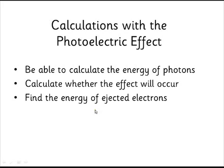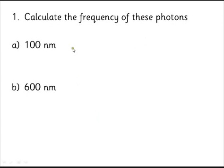We'll break this down for you, try to make it nice and straightforward. First job is to calculate the frequency of photons, so if you've got a photon with a wavelength of 100 nanometers, all we have to do is use the wave equation, c equals f lambda, rearrange that to get f equals c over lambda.